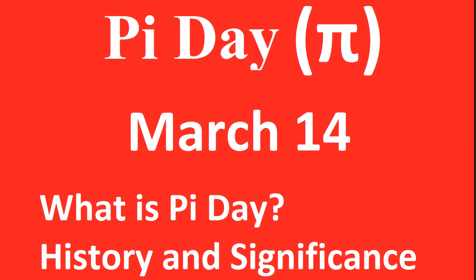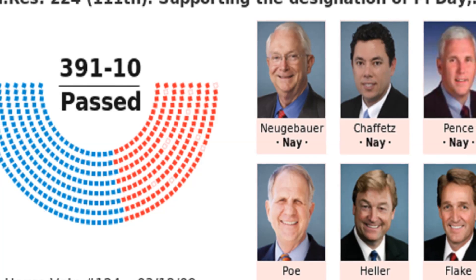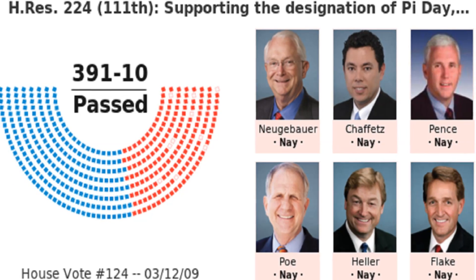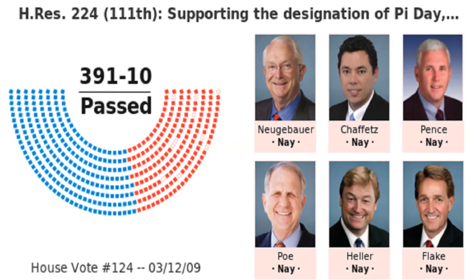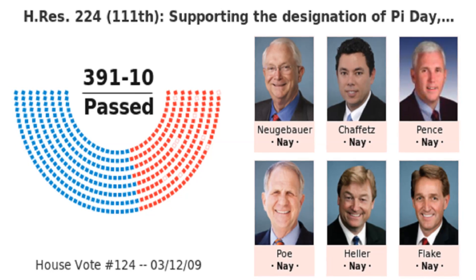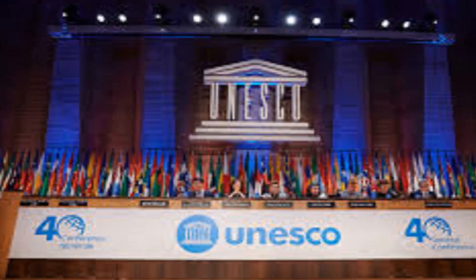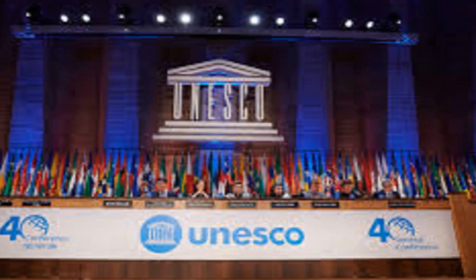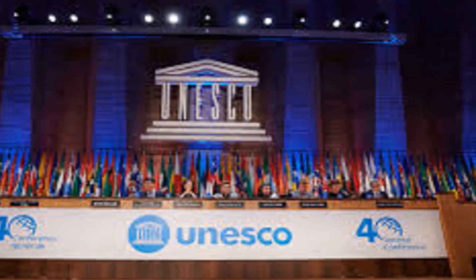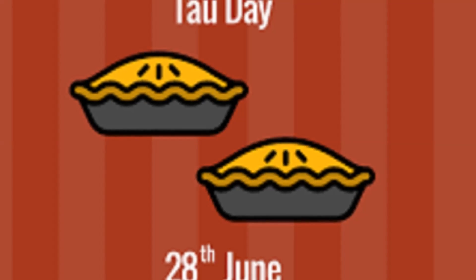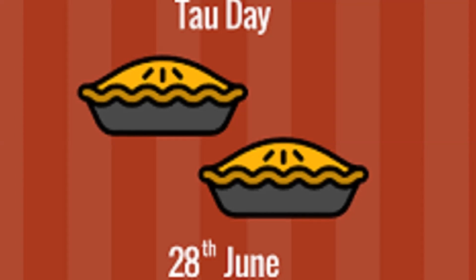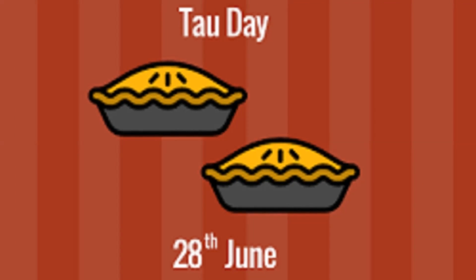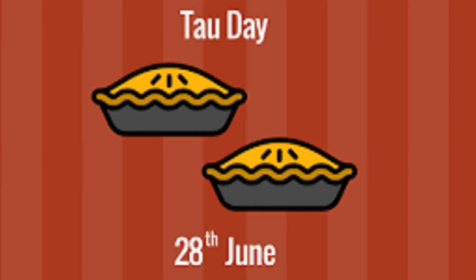In 2009, the United States House of Representatives supported the designation of Pi Day. UNESCO's 40th General Conference designated Pi Day as the International Day of Mathematics in November 2019. While 2 Pi Day, also known as Tau Day, for the mathematical constant Tau, is observed on June 20th.